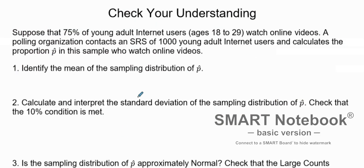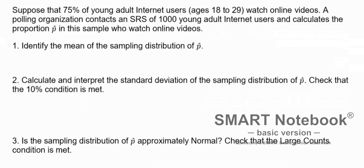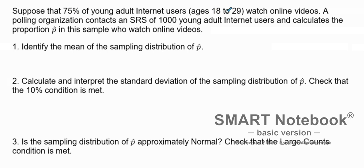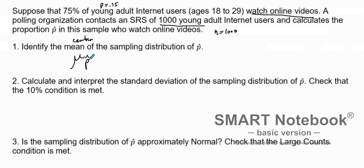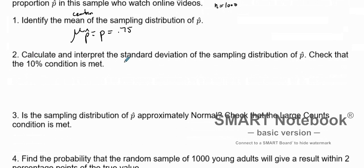Let's go through an example. Suppose that 75% of young adult internet users ages 18 to 29 watch online videos. A polling organization contacts an SRS of 1000 young adults. So our n value is 1000 and our p-value is 0.75. Identify the mean of the sampling distribution of p-hat, and calculate and interpret the standard deviation.